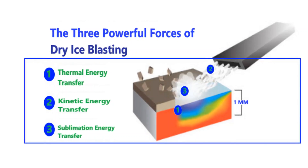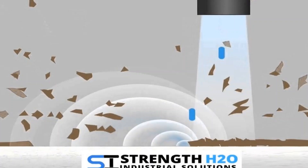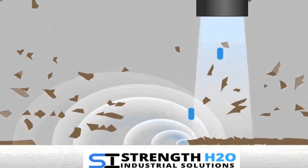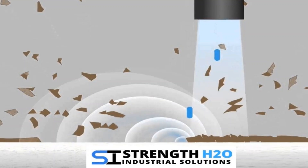Stage 2 effect: Impact shock. The dry ice pellets bombard the cleaning surface at a high rate of speed, breaking up the brittle and fractured coating or contaminant.